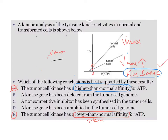Option B says the kinase gene has been deleted from the tumor cell genome. If the kinase gene is deleted, the tumor cannot synthesize kinase, and you wouldn't see any velocity curve for the tumor cell at all. That is why option B is incorrect.